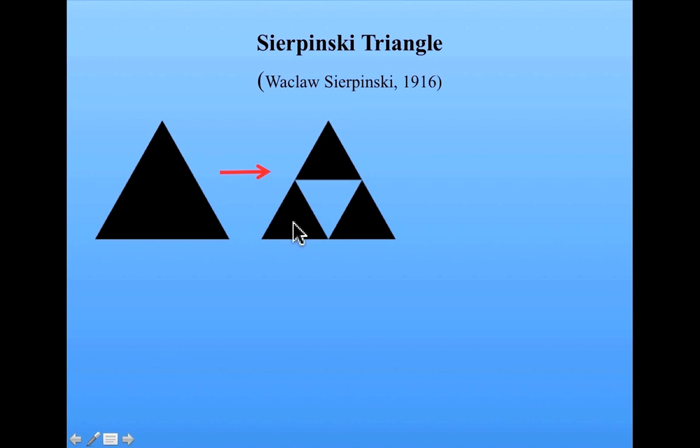We're now left with three smaller triangles, each of whose sides are exactly one half the length of the original triangle's side.